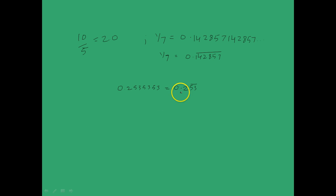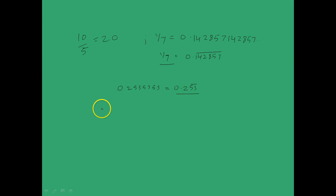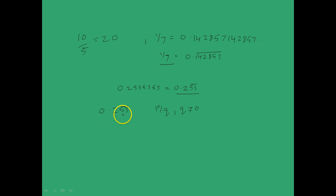Now we will look at conversion of this repeating decimal representation to the form p by q. Let's take the case of 0.253 bar and convert it into the form p by q where q is not equal to 0. In doing so, we will also be proving that a non-terminating repeating sequence is actually a rational number. Say we call x equal to 0.253 bar.